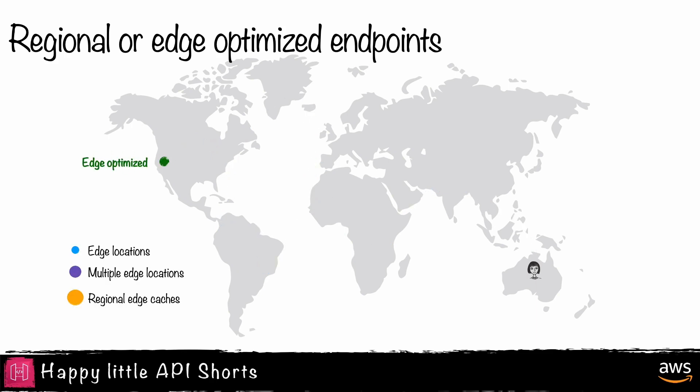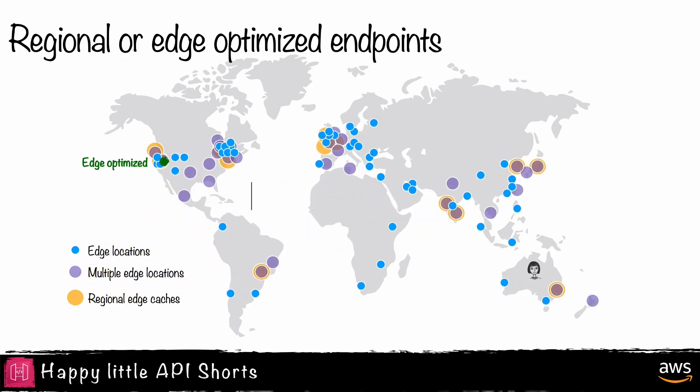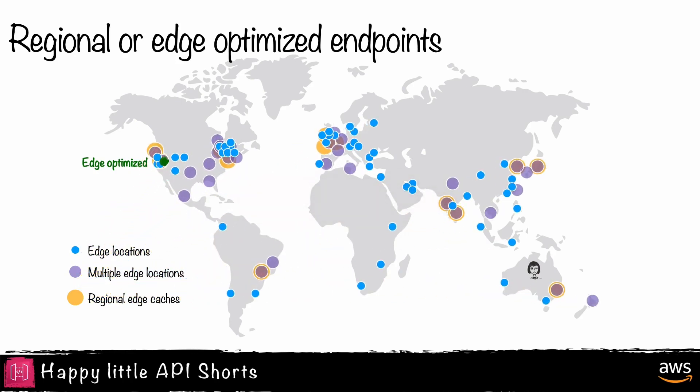Edge-optimized endpoints, however, take advantage of Amazon's global edge network. This means that a request is routed to the nearest edge location where it then uses Amazon's private network to reach the API destination. In this scenario, my client's request from Alice Springs would only travel the internet to Sydney, where it would then use the private Amazon network to reach my API in US West 2.